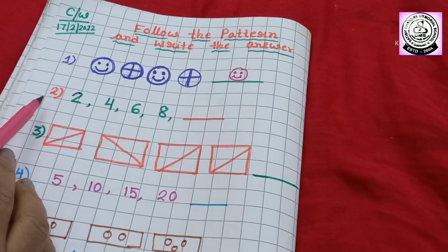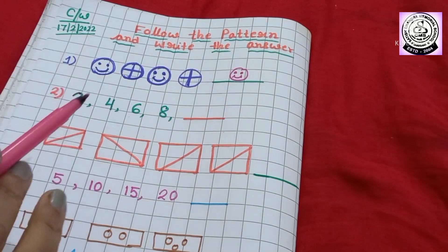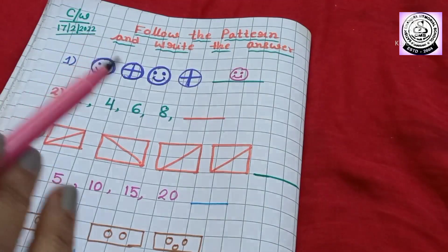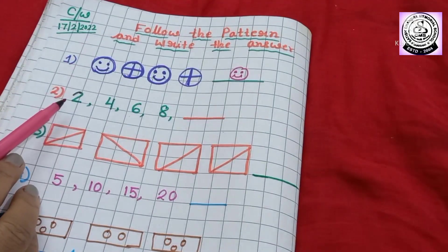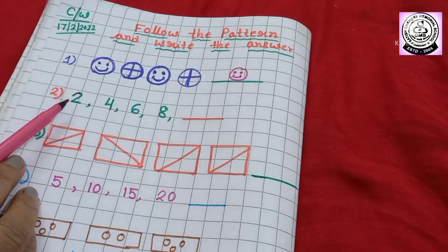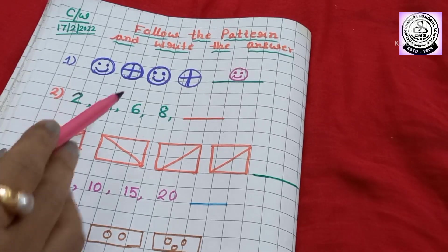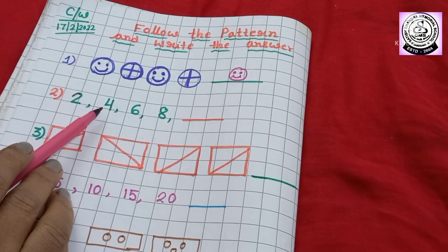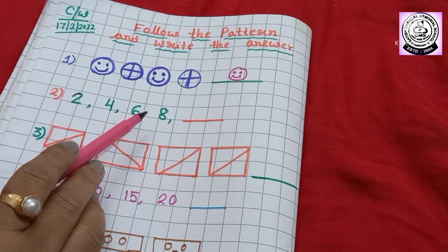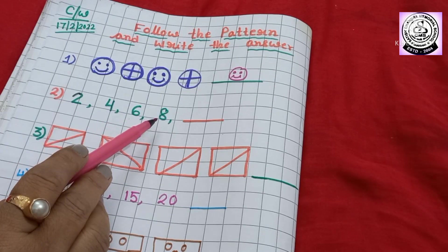Then, number 2. Already you have learned skip counting. So, here you can see, first I have written 2. After 2, I have skipped 3, then I have written 4. After 4, I have skipped 5 and written 6. And again, I have skipped 7 and written 8.